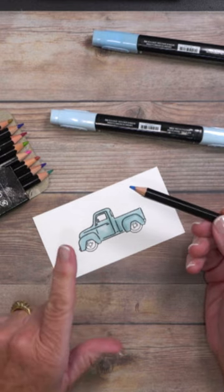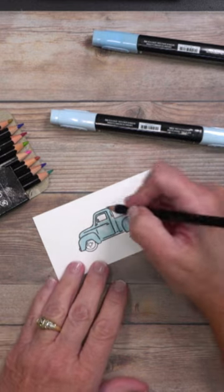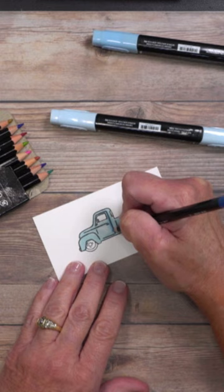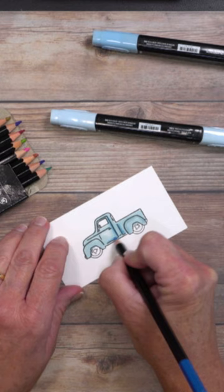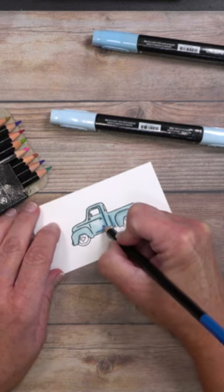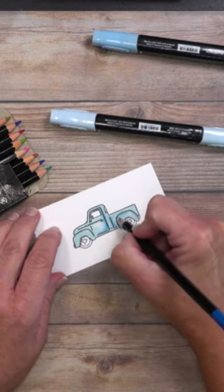This is where the beauty of your watercolor pencils or colored pencils comes into play. I can actually add darker colors inside of those areas with the pencil. The great thing about the pencil is it's a lot more precise. I can get into little tiny detailed areas and pull out the color.